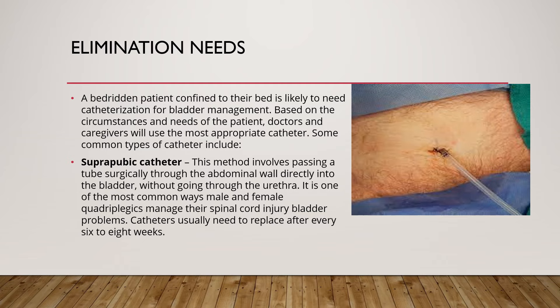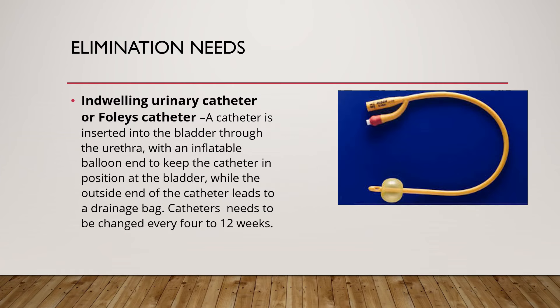A bedridden patient confined to their bed is likely to need catheterization for bladder management. Based on circumstances and needs of the patient, doctors and caregivers will use the most appropriate catheter. One common type is the suprapubic catheter: this method involves passing a tube surgically through the abdominal wall directly into the bladder without going through the urethra. It is one of the most common ways male and female quadriplegics manage spinal cord injury bladder problems. Catheters usually need to be replaced every 6 to 8 weeks. Another type is the indwelling urinary catheter or Foley catheter, where a catheter is inserted into the bladder through the urethra with an inflatable balloon end to keep it in position, while the outside end leads to a drainage bag.